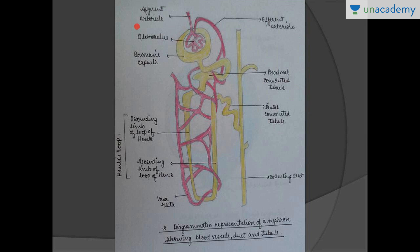The afferent arteriole comes from the renal artery, and the efferent arteriole further divides into peritubular capillaries — these red structures are called the peritubular capillaries. One important thing: the afferent arteriole diameter is larger than the efferent arteriole diameter because it helps in the formation of urine by the process of ultrafiltration.